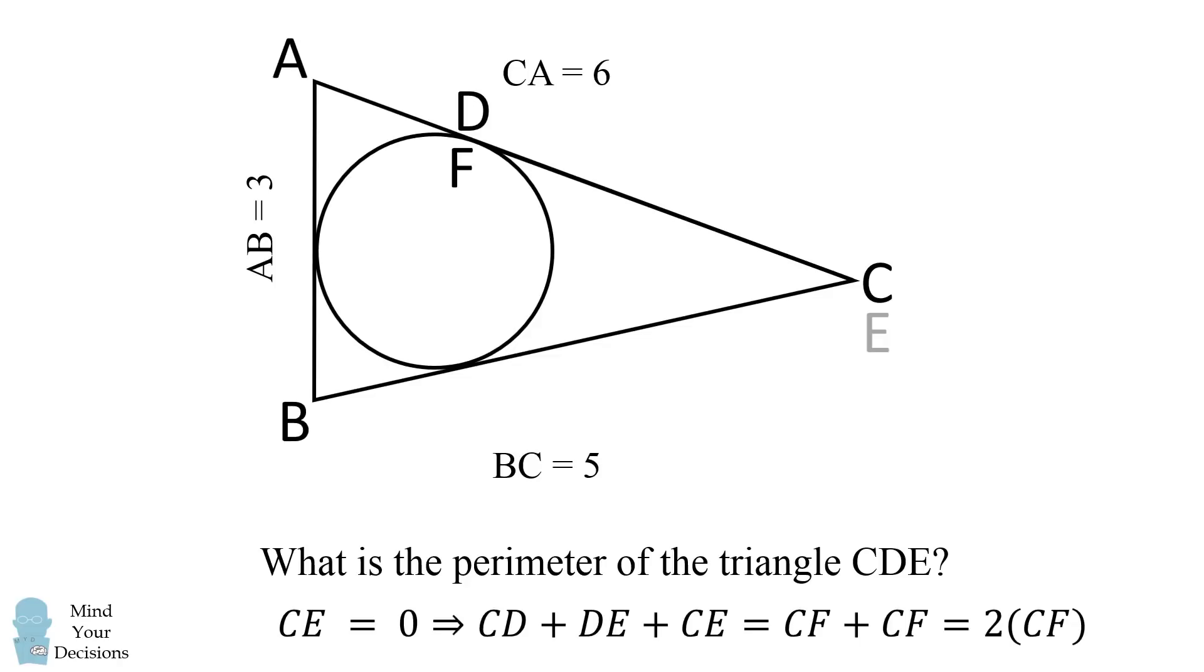So since CE is equal to 0, the perimeter of this triangle CD plus DE plus CE is equal to CF plus CF, which is equal to 2 times CF. So this is an alternate way to see the perimeter of triangle CD is also equal to 2 times CF.